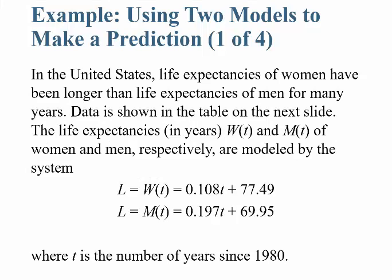I want to start with an example of a model. In the United States, life expectancies of women have been longer than life expectancies of men for many, many years. The life expectancy in years of W(t) and M(t) for women and men respectively are modeled by these equations. The life expectancy of women is W(t) = 0.108t + 77.49, where t is years since 1980. Life expectancy of men is M(t) = 0.197t + 69.95. Notice women have a higher intercept but smaller slope; men have the lower intercept but higher slope.